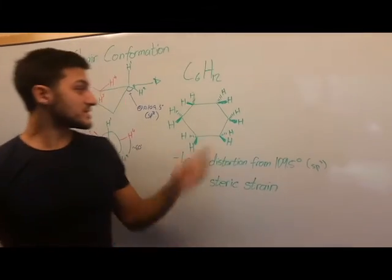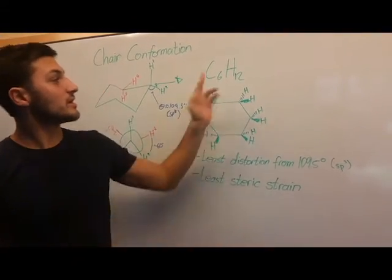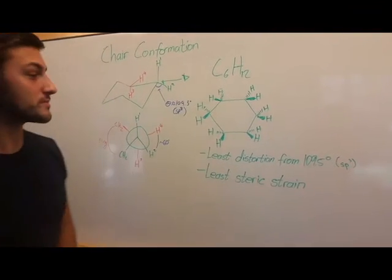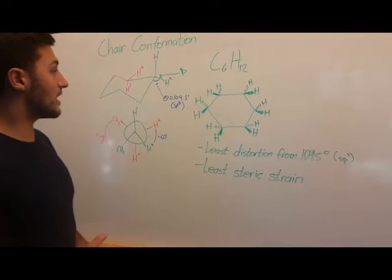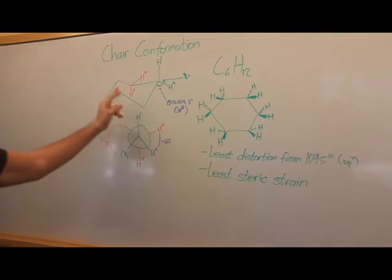This is cyclohexane, and this is a planar representation of the molecule. Its molecular formula is C6H12, and it's the most stable ring structure that's known. To understand why it's the most stable, we must consider its chair conformation, which you can see here.